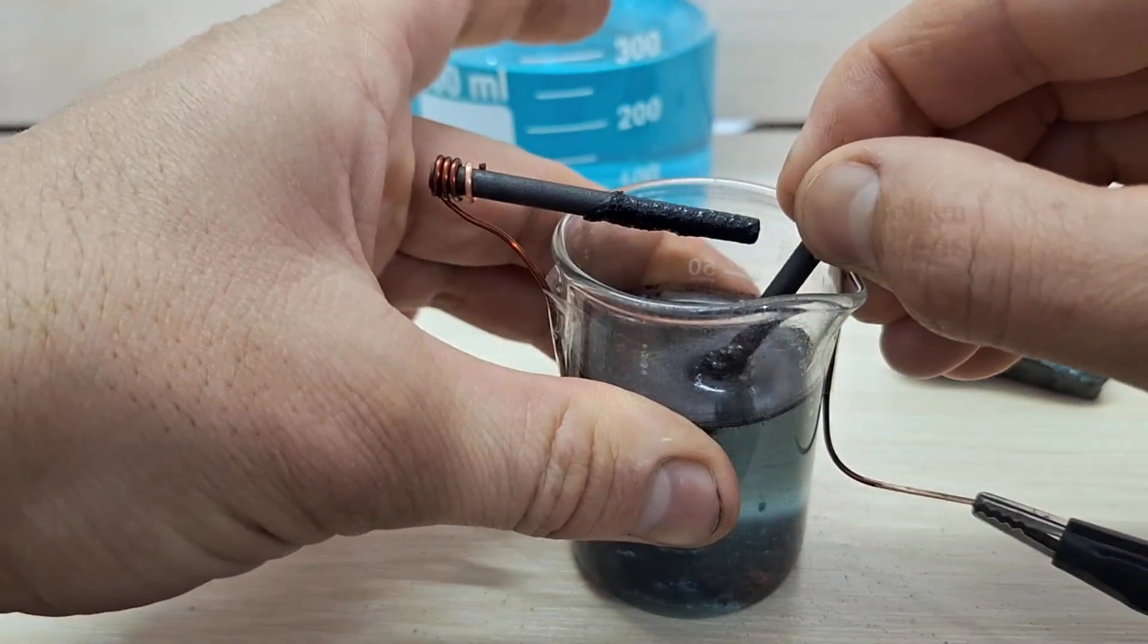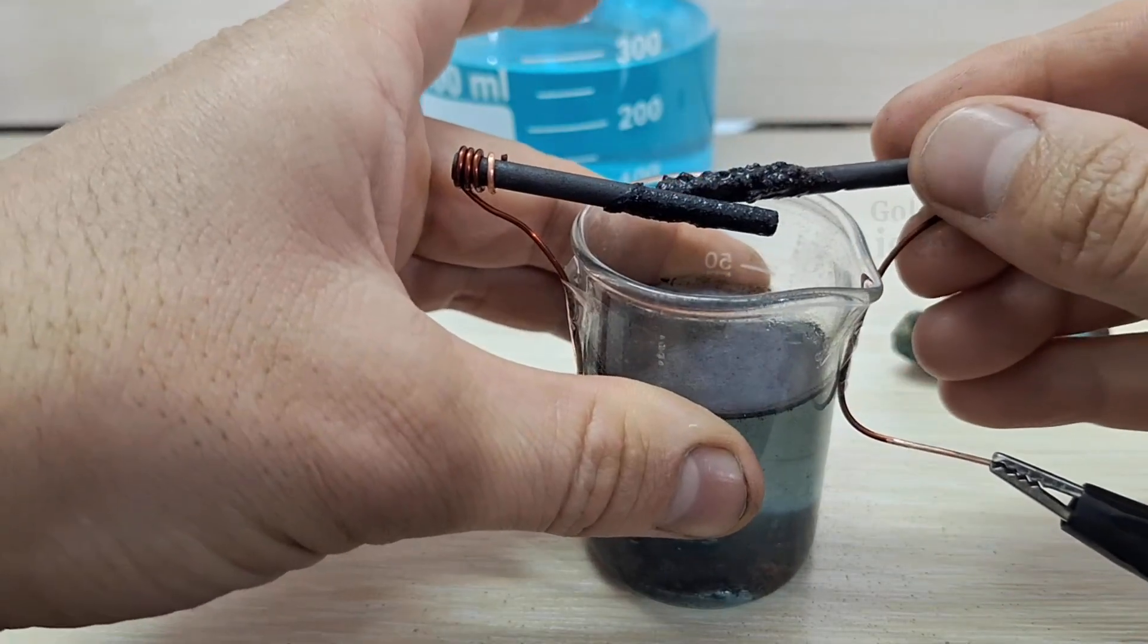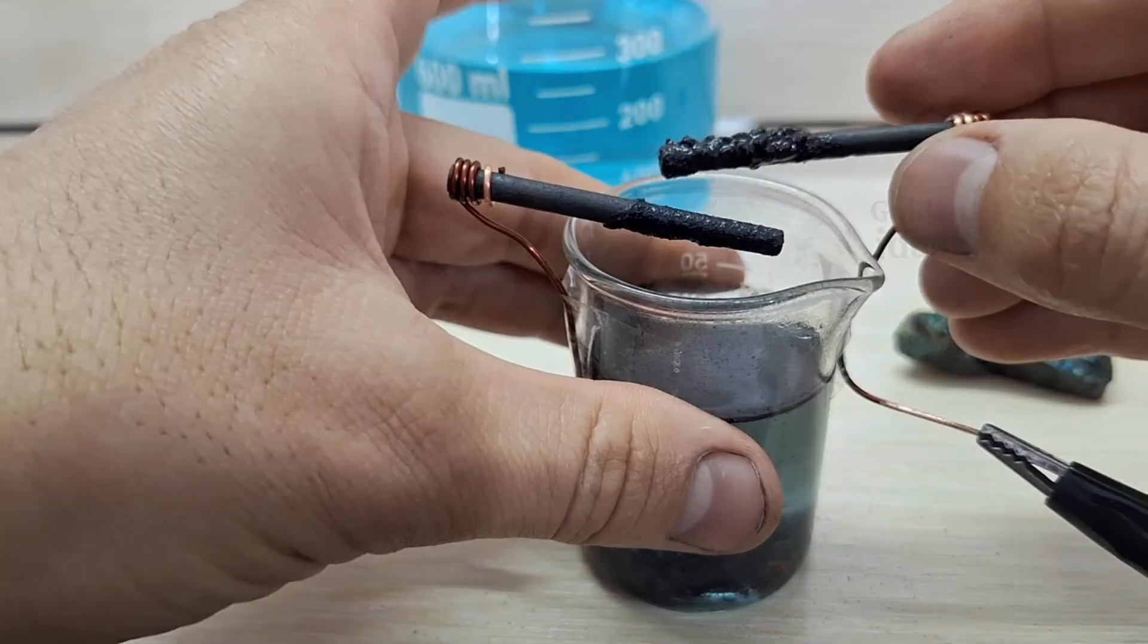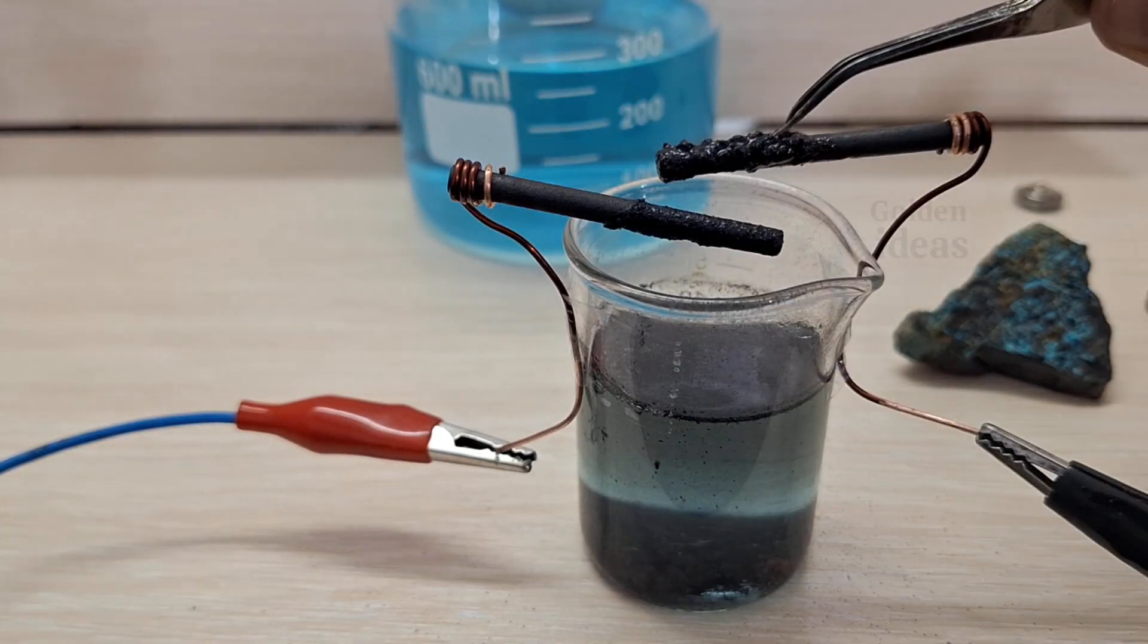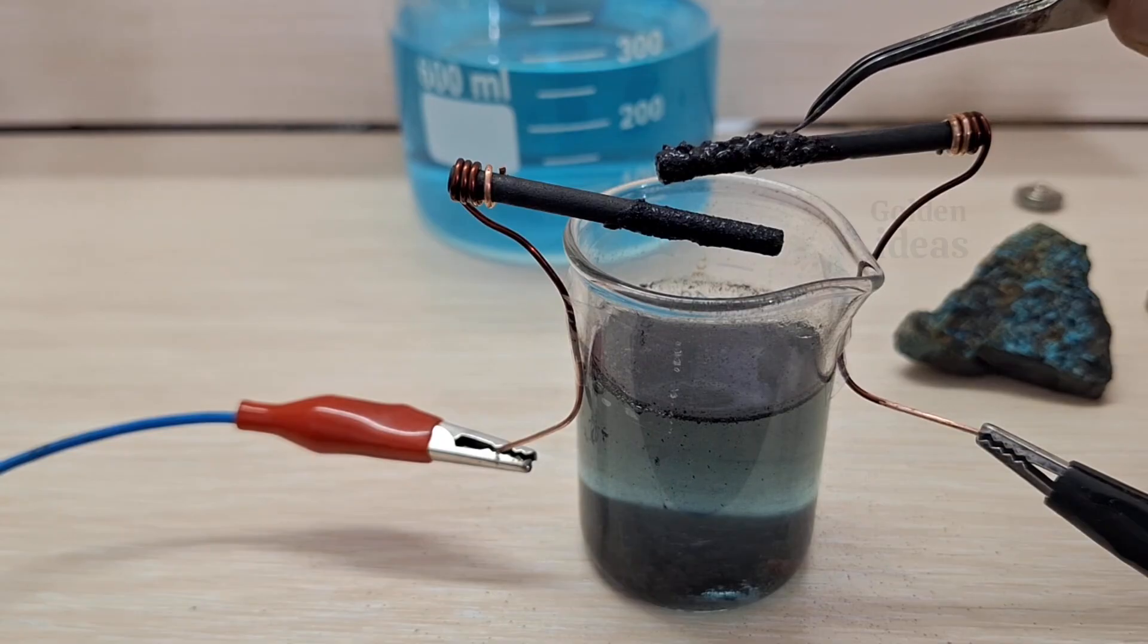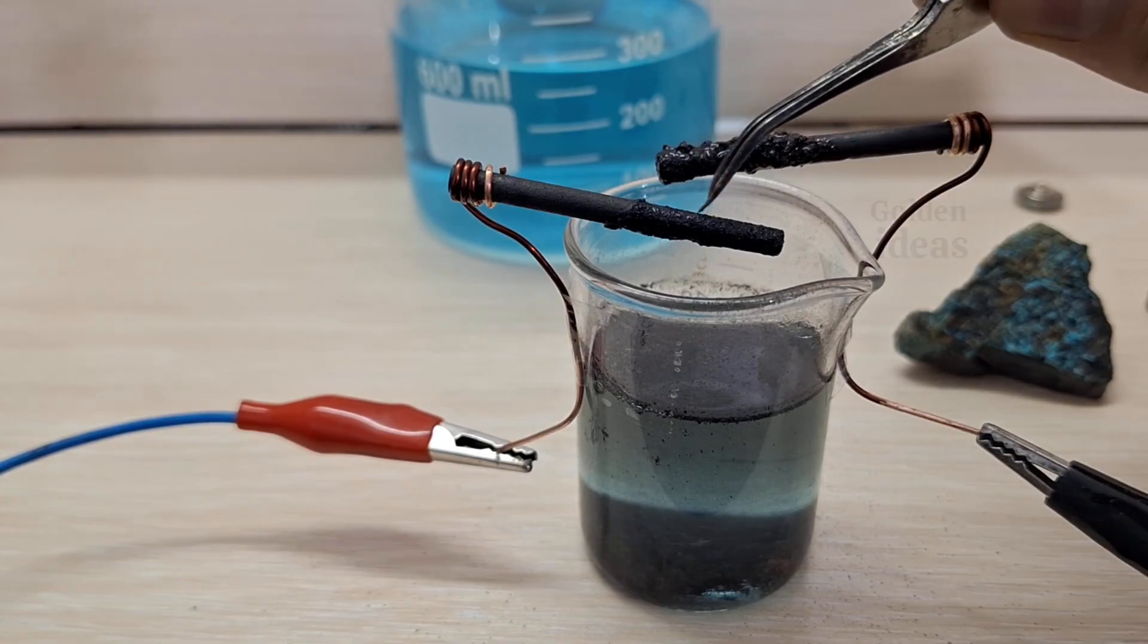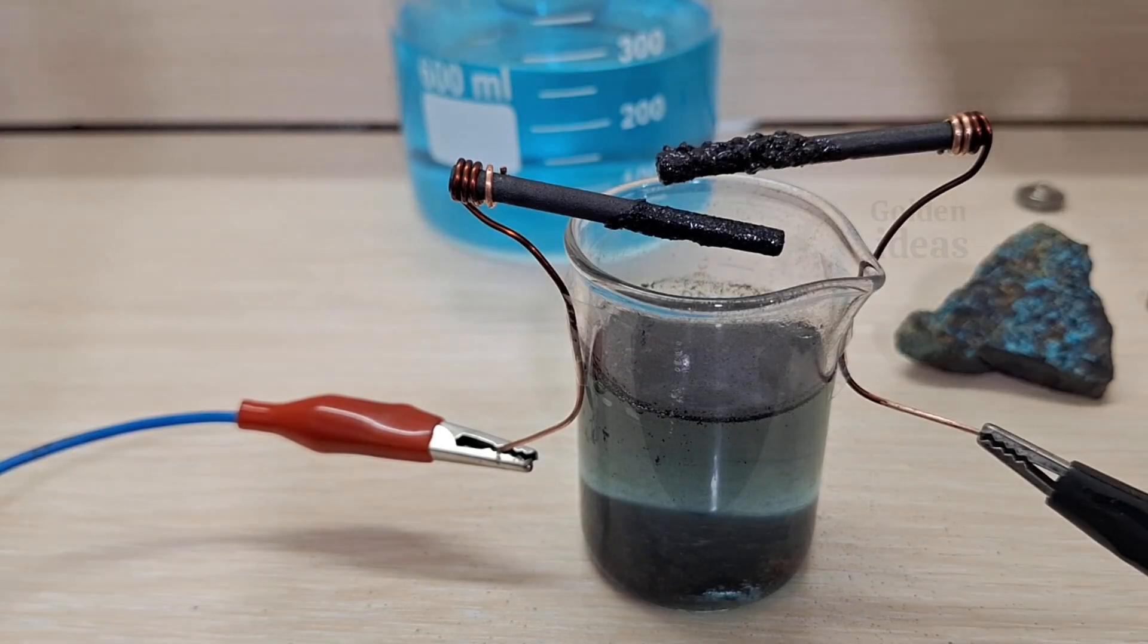Let me now remove the electrodes from the solution so we can see what actually happened. As you can see, the electrode at the anode doesn't seem to have decomposed at all, even though it looked like it was breaking down in the solution earlier. A significant amount of metal in powder form has stuck to the cathode, which means it's holding metallic elements.